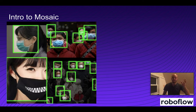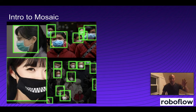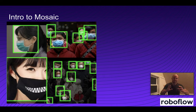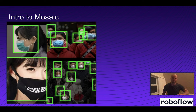Now, mosaic data augmentation comes out of that idea of mixing images together to make the model perform better in different scenarios and teach it to localize objects in different places. Mosaic takes the image, tiles it into four, puts those four into four different corners, and combines all the annotations in one place. Here you can see a mask-wearing dataset where people are tagged in different places across the combined images. The model has to localize objects in different places and learn slightly different contexts around them.